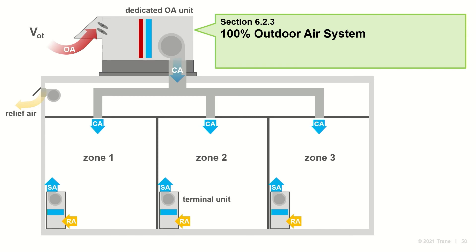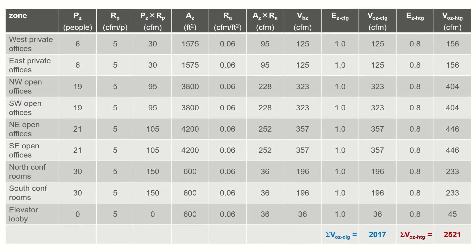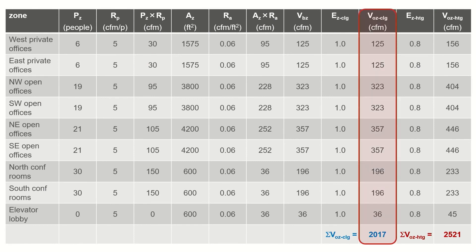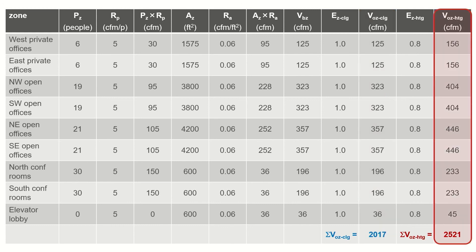Moving on to the 100% outdoor air system: a dedicated outdoor air unit delivers conditioned outdoor air directly to all zones on the floor plate, with a local terminal unit in each zone for cooling or heating. Since the ventilation system delivers only outdoor air and no recirculated air, the required system intake flow V-sub-OT equals the sum of the zone outdoor air flows — 2,017 CFM if E-sub-Z is 1, or 2,521 CFM if E-sub-Z is 0.8.